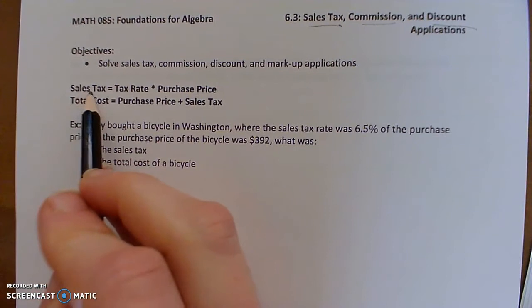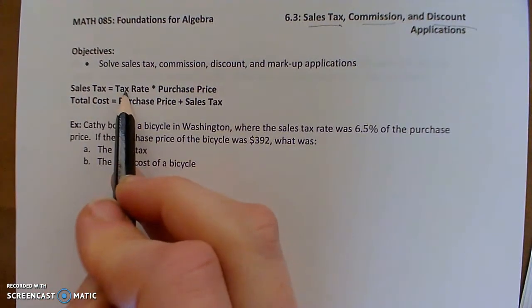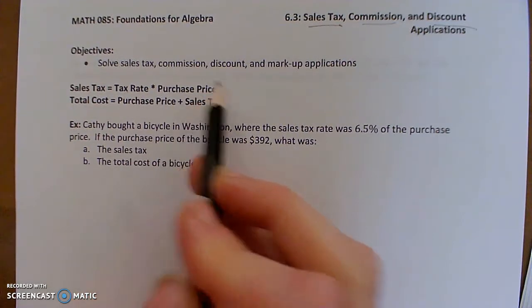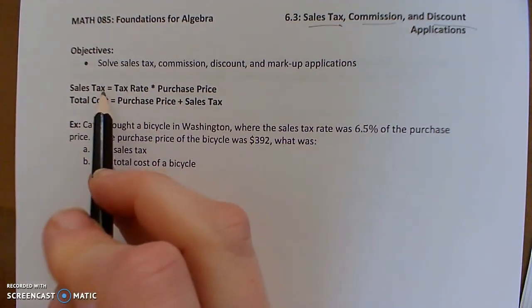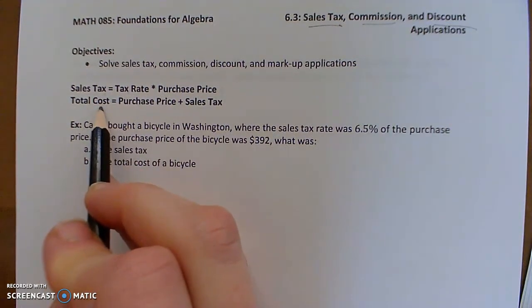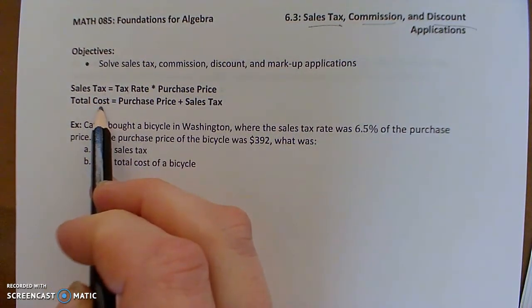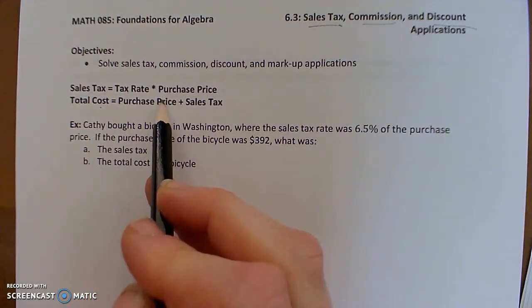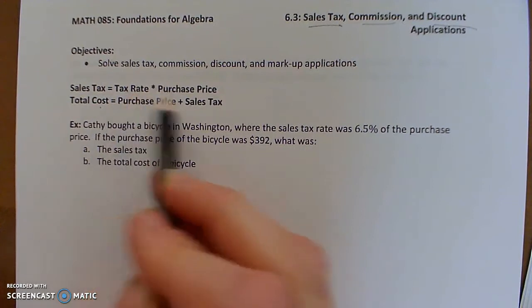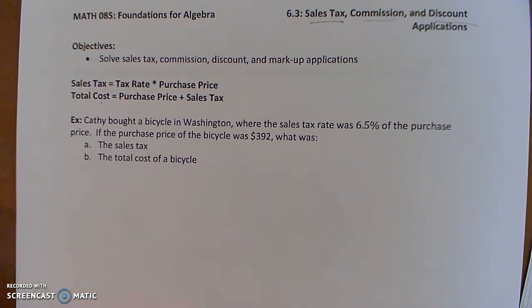So problems involving sales tax. The amount of tax will always be the rate times the purchase price. So the tax rate times whatever the total purchase is, that'll give you the amount of sales tax. And then calculating the total cost of an item, you would take the purchase price and add on that sales tax, which would be a percentage of the purchase price.